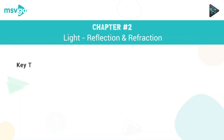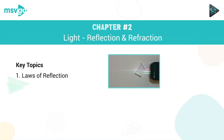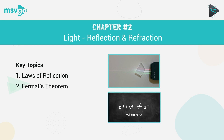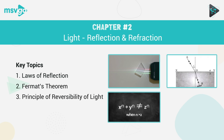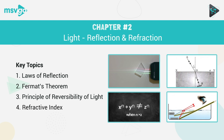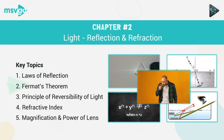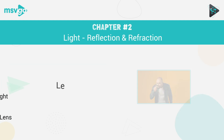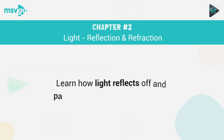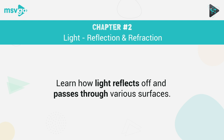The important subtopics in this chapter are: Laws of Reflection, Fermat's Theorem, Principle of Reversibility of Light, Refractive Index, and Magnification and Power of Lens. You will learn all about the refraction and reflection theories of light — make sure you focus on them particularly.